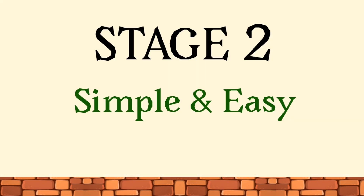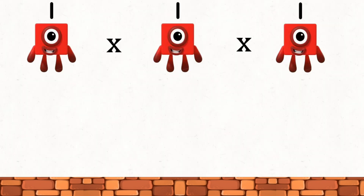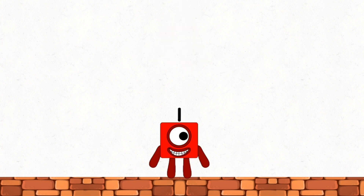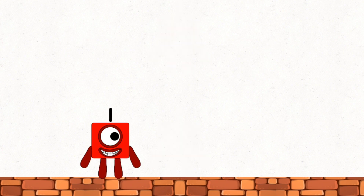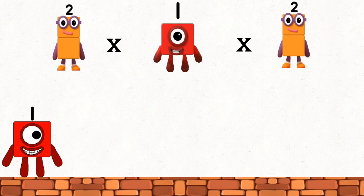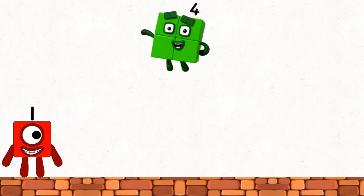Stage two, simple and easy. One times one times one equals one. Two times one times two equals four.